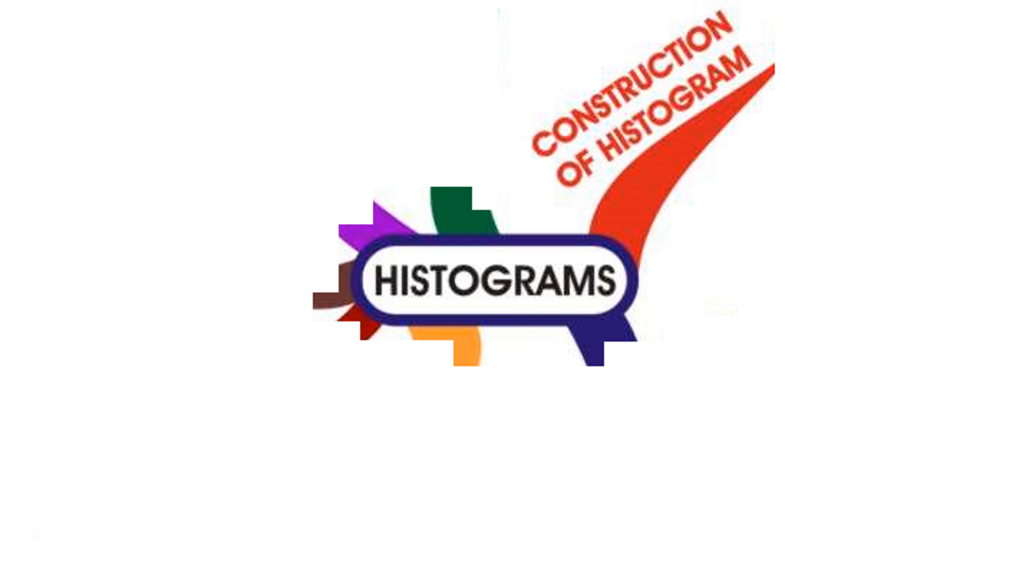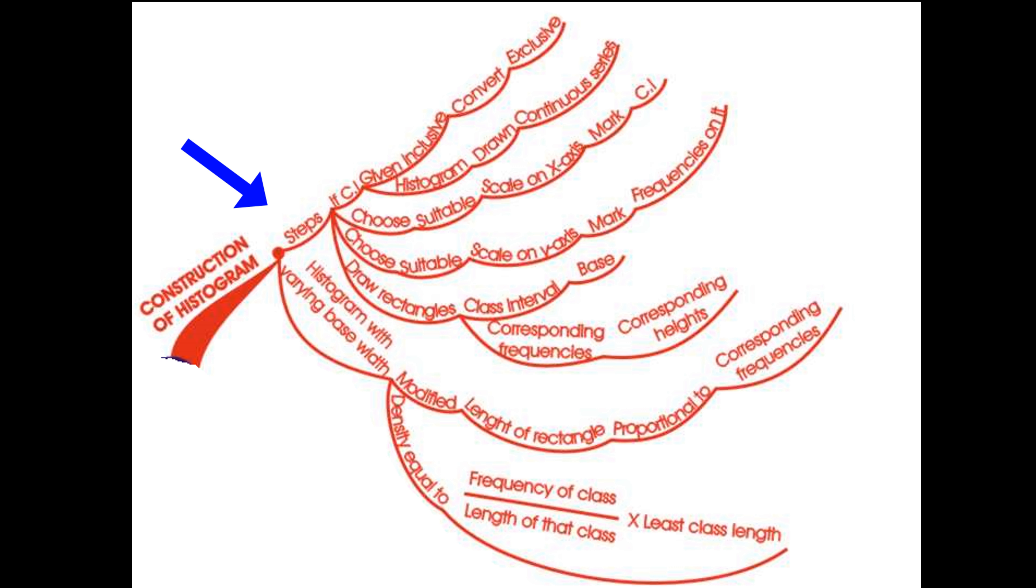Let us see our second branch. It is about construction of histogram. Here we have a few steps. Step 1: If the class intervals given are inclusive, convert them into exclusive form since the histogram has to be drawn for a continuous series.